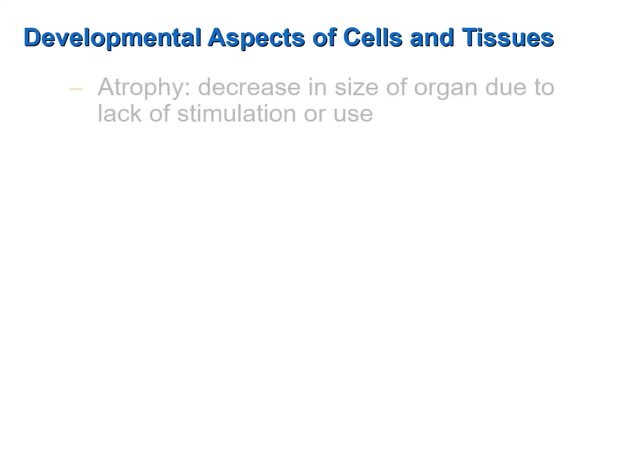Just as organs can increase in size due to hyperplasia or hypertrophy, organs can also decrease in size, or atrophy. Atrophy is often referred to as a wasting away of an organ, and typically this happens due to a decrease in use and/or a decrease in stimulation.